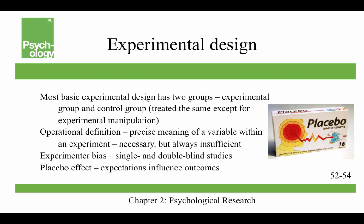Experimenter bias is when researchers' expectations may skew the results of the study. A way to deal with experimenter bias is through single or double-blind studies. In a single-blind study, participants don't know what group they're in — whether they're in the experimental group or the control group. In a double-blind study, neither the participants nor the researchers know which group the participants are in. The placebo effect shows that expectations can influence outcomes — if you're given a pill and told it'll make you drowsy, you might actually fall asleep.